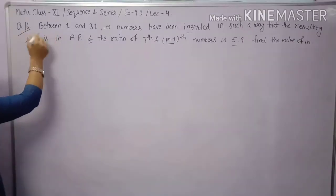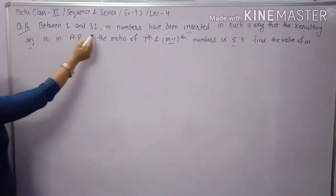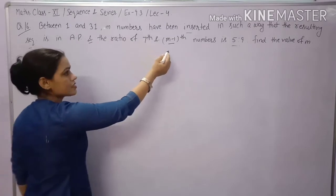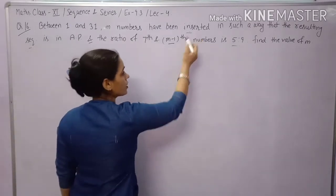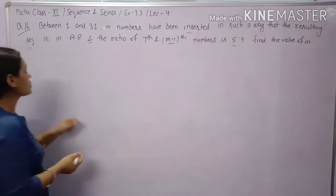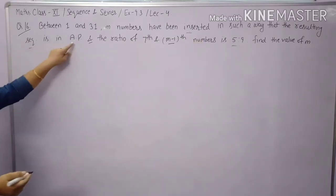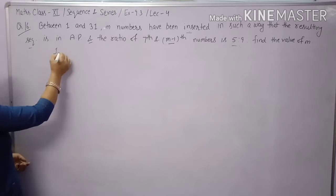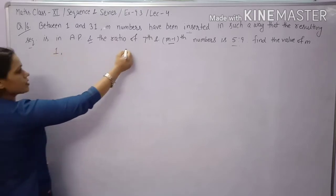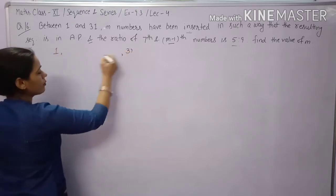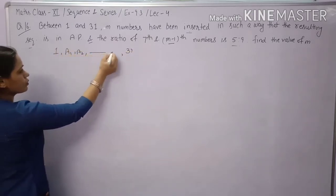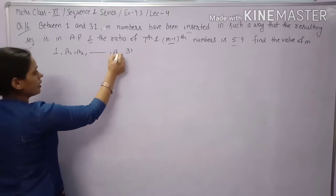Question 16 is given: Between 1 and 31, M numbers have been inserted in such a way that the resulting sequence is in AP. We have to take M numbers between 1 and 31. This forms our AP: A1, A2, up to AN.